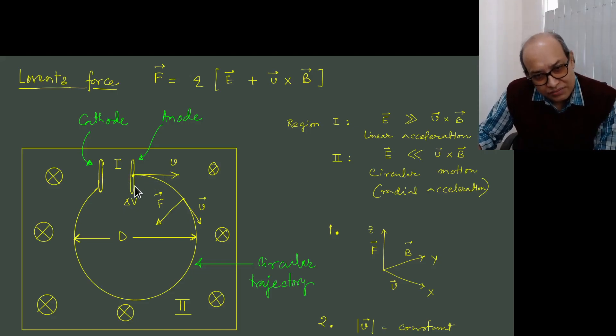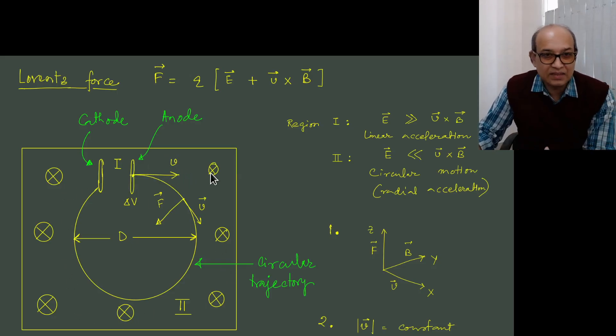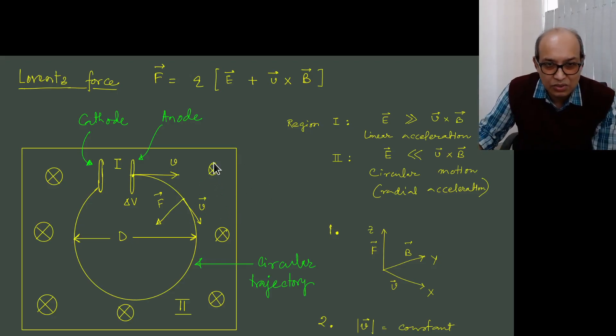So essentially the motion of the particle is determined by the electric field alone. Now once it comes out of this anode where we have negligible electric field, the remaining part outside this parallel plate, we set it up in such a way that we do have magnetic field outside. The magnetic field is going into this plane, going into the plane of the page.